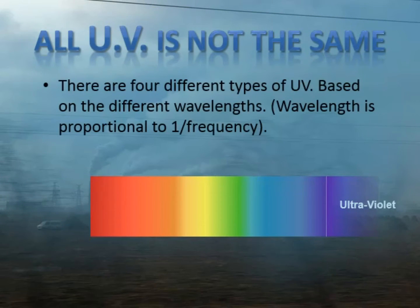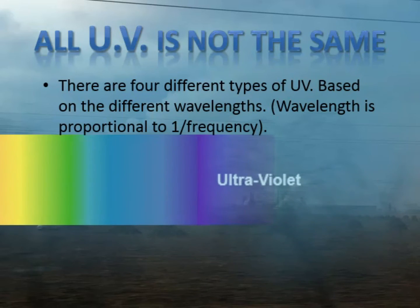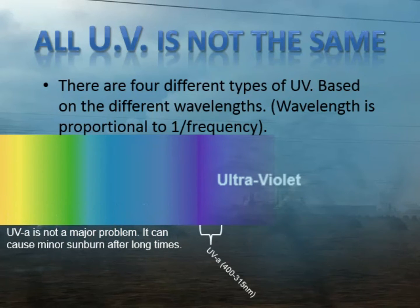All UV is not the same — there are actually four different types. We break them down on frequency or wavelength, which is proportional to frequency, or one over frequency. If we look at the ultraviolet range, UVA is closest to visible light at 400 to 315 nanometres. A nanometre is 10 to the minus 9 metres. UVA can cause minor sunburn after a long time, but it's not really a problem.